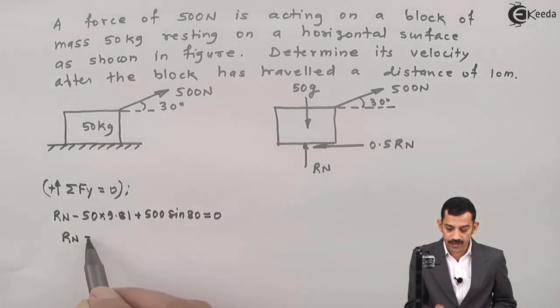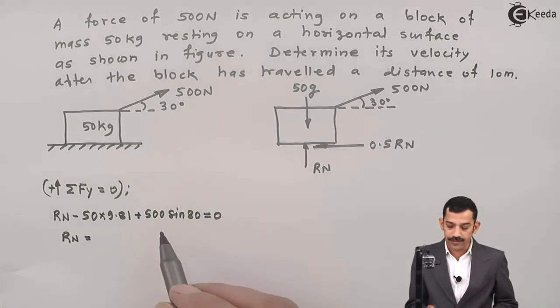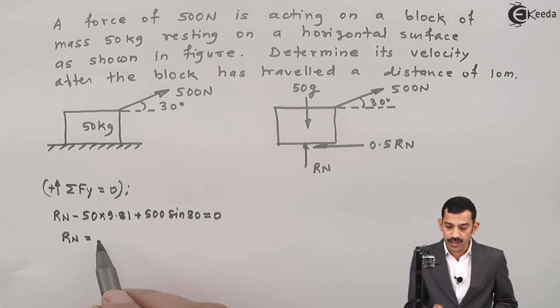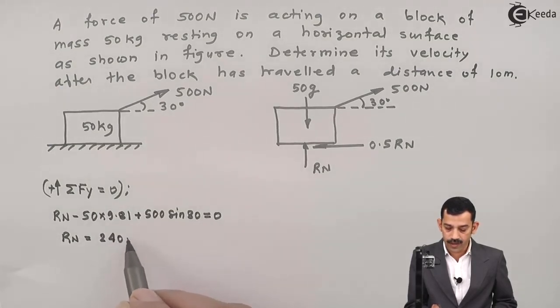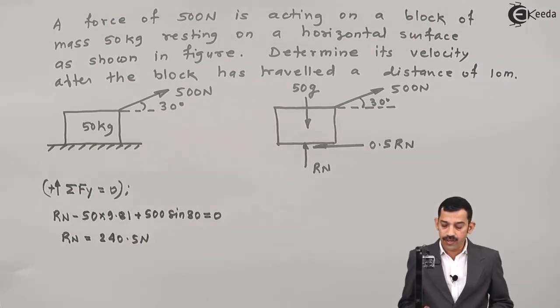Therefore, normal reaction comes out to be, if we calculate using calculator, this value comes out to be 240.5 Newton.